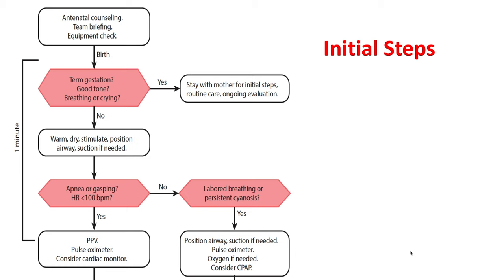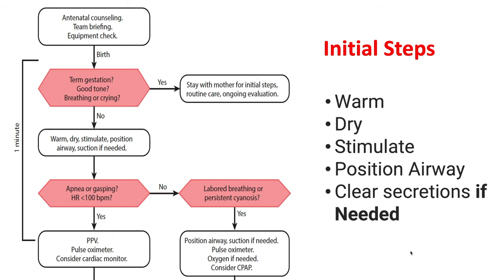The initial steps have been reordered to better reflect common practice. We will place the baby on the warmer, dry and stimulate. Don't forget to remove the wet linen and then position the airway. At this point, clear the secretions if needed. If the baby does not have apnea or gasping and the heart rate is at least 100, we should ask if there is labored breathing or persistent cyanosis. If yes, we can suction if needed, attach pulse oximetry, and if indicated start providing oxygen and/or consider CPAP. If the baby has apnea or gasping and the heart rate is below 100, immediately start PPV.